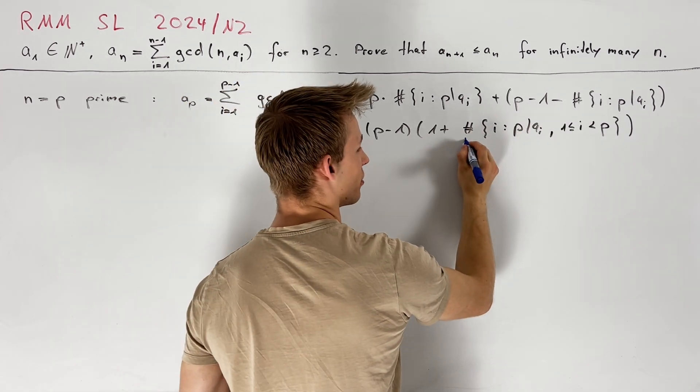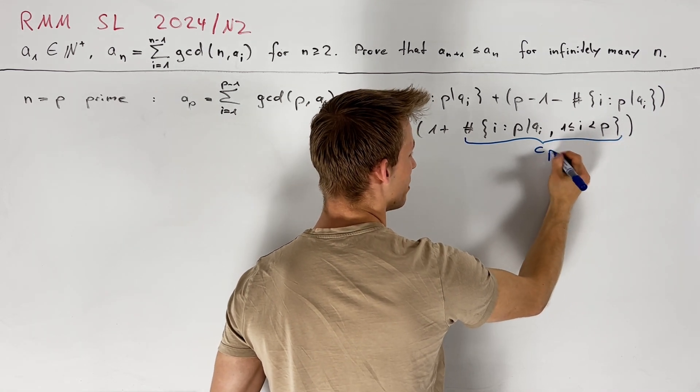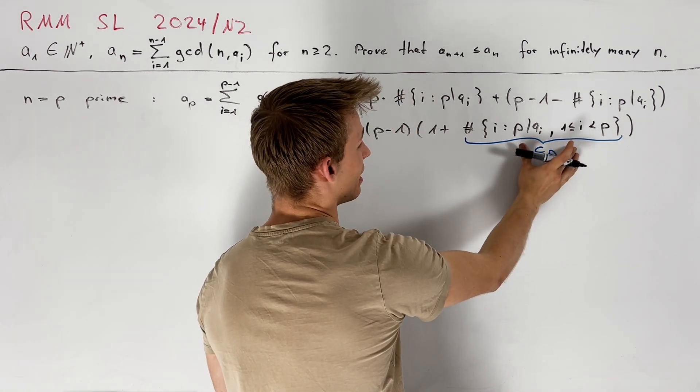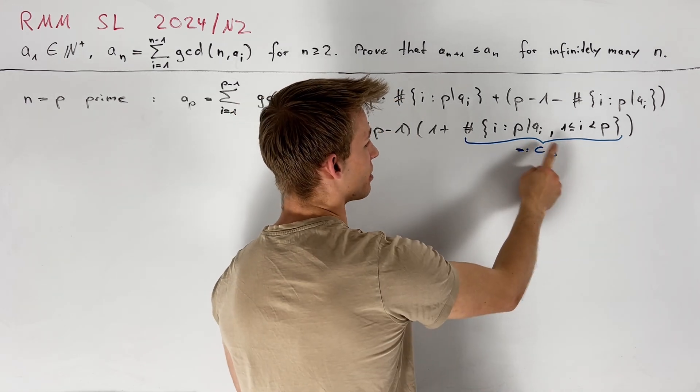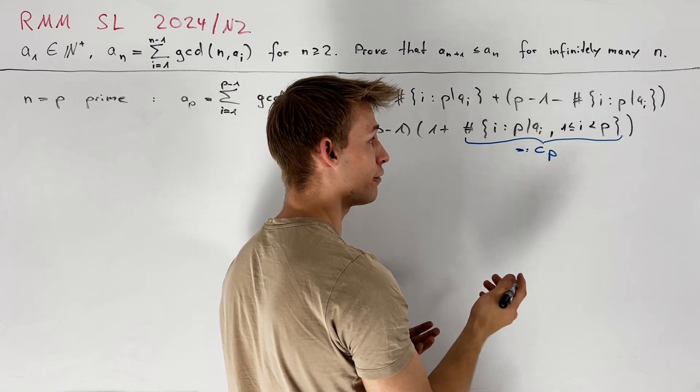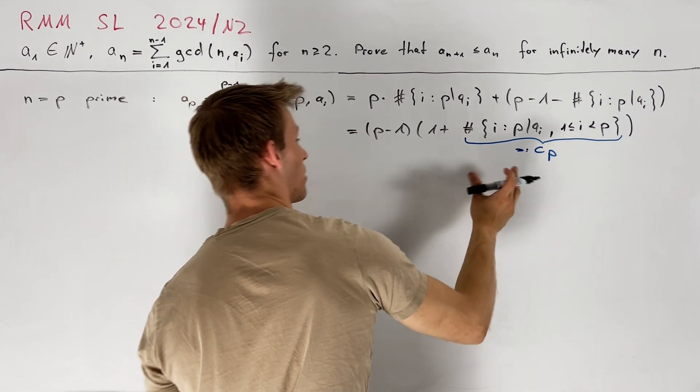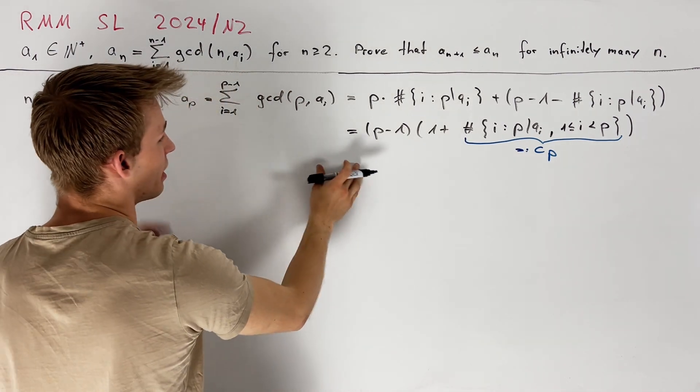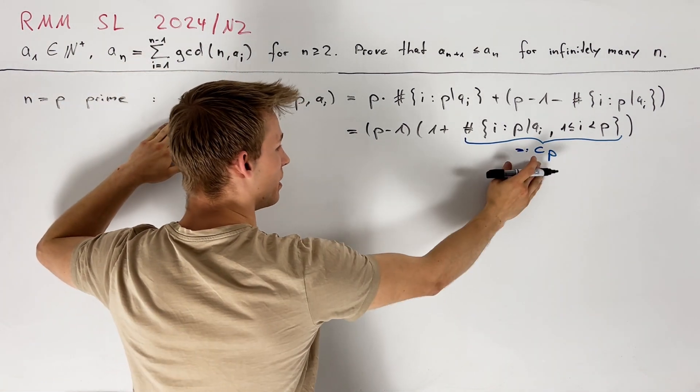For convenience I want to denote this quantity here from now on as c_p. Taking a look at the set here we can see that if our sequence a_i is increasing then all the values a_i for i in the set are distinct multiples of p and therefore one of them is at least c_p times p. This seems quite promising because as we can see by this calculation here a_p is also almost equal to p times c_p.